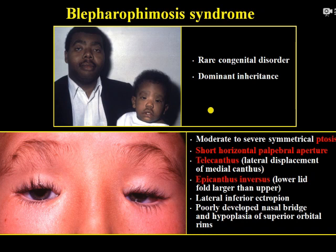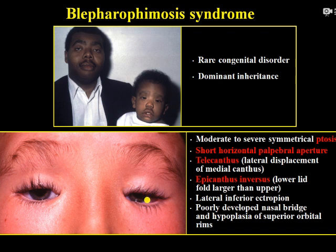Blepharophimosis syndrome is defined as a narrowing of the horizontal palpebral aperture. Usually in ptosis the vertical palpebral aperture is shortened, but in this case the horizontal distance is also decreased. Ptosis is present with very poor levator function and the upper eyelid crease is absent. Telecanthus — an increased distance between the two medial canthi — may also be present, as can be seen in the picture.